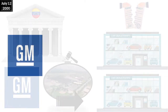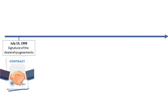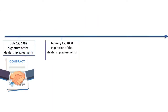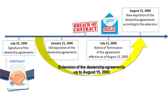Back in the year 2000, on July 12, GM Venezuela sent a notice to two car dealerships to terminate their agreements. These dealership agreements were entered into on July 19, 1999, and were due to expire on January 15, 2000, but GM Venezuela extended their duration up to August 15, 2000. The agreements provided for grounds of termination in case of default of the party's obligations. Since the car dealerships defaulted, GM Venezuela sent them a notice of termination effective as of August 15, 2000.